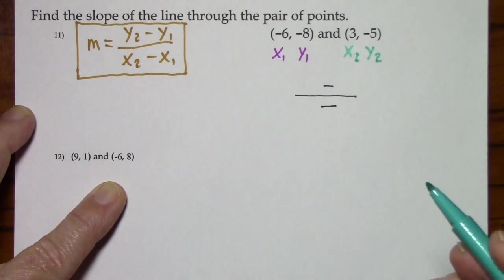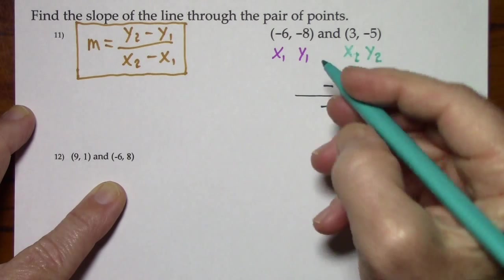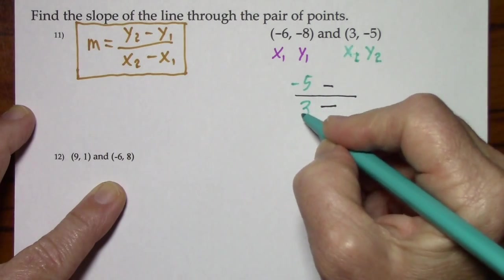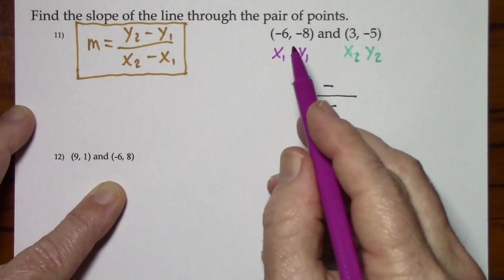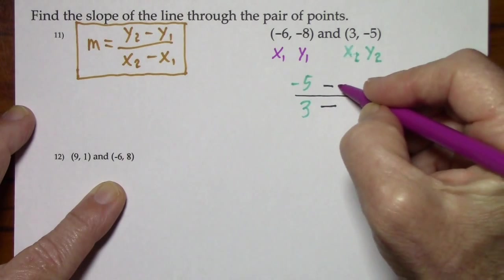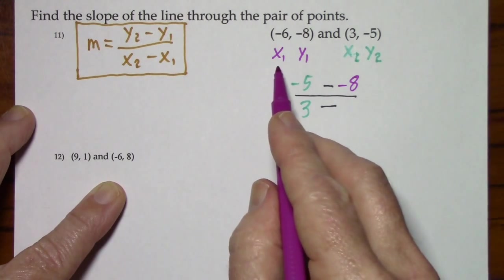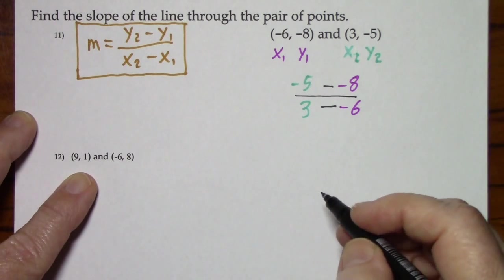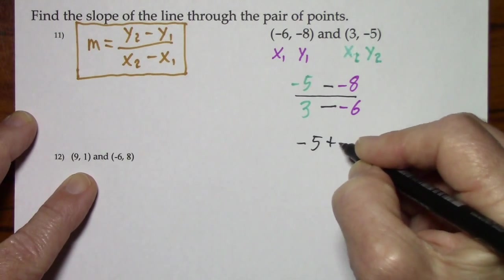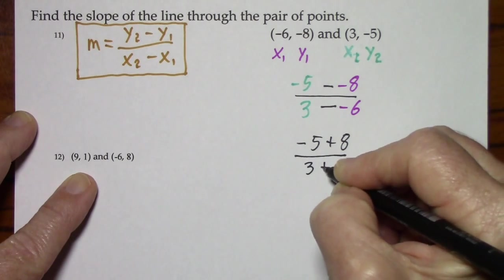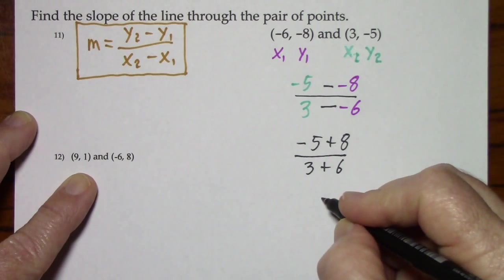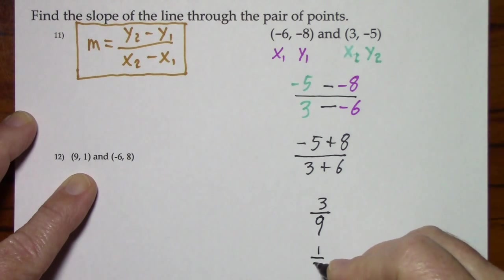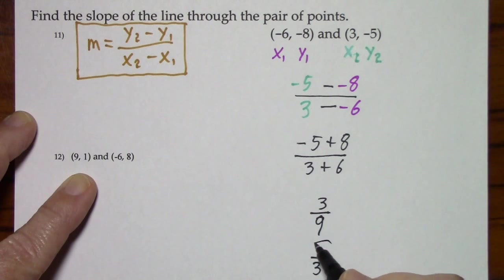And now I'll plug in the values. y sub 2 goes right here. x sub 2 goes down here. You can see y sub 1 is up here. Here's our y sub 1, negative 8. And then x sub 1 is down here, negative 6. My preference is to clean this up when I have two signs in front of a number. So treating the numerator separately, we end up with 3. The denominator gives us a 9, and this can be simplified. So the slope that goes through the points is 1 third.